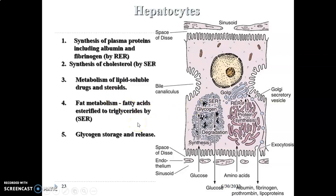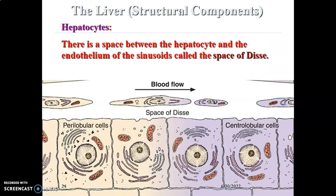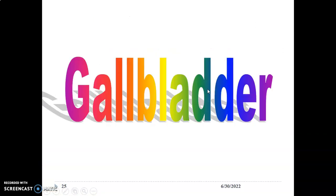Hepatocytes help with glycogen storage and release, as well as secretion of bile. Those are the functions of the hepatocyte, and that is able to explain the histological structures. Here you can appreciate the hepatocyte, the endothelium of the sinusoids, and the Space of Disse between the hepatocyte and the sinusoid. This shows the hepatocytes radiating like rays, with the Space of Disse and the endothelial cells lining the sinusoids where blood is flowing.